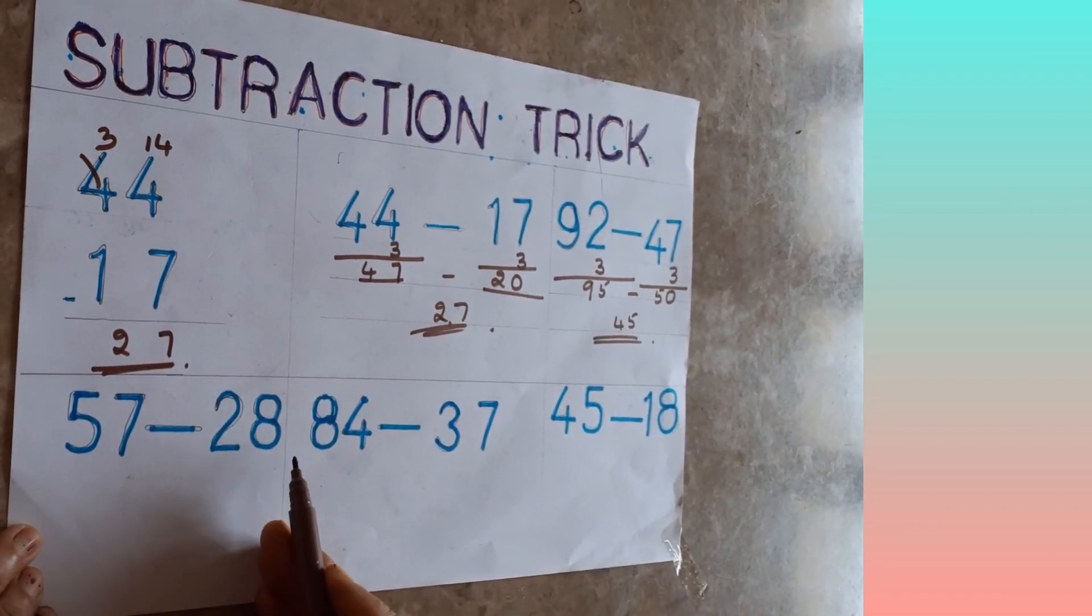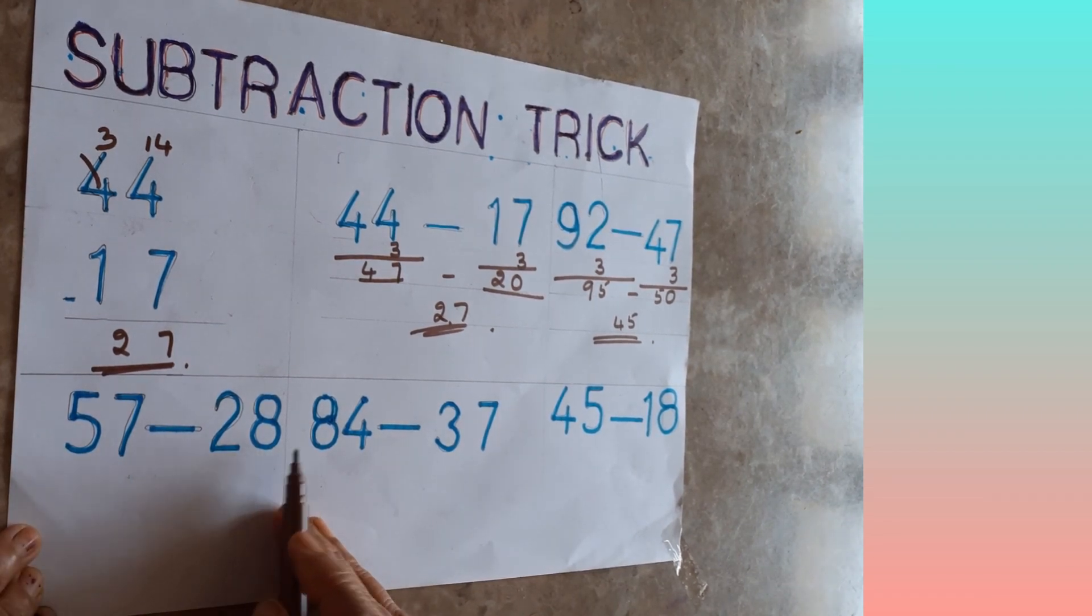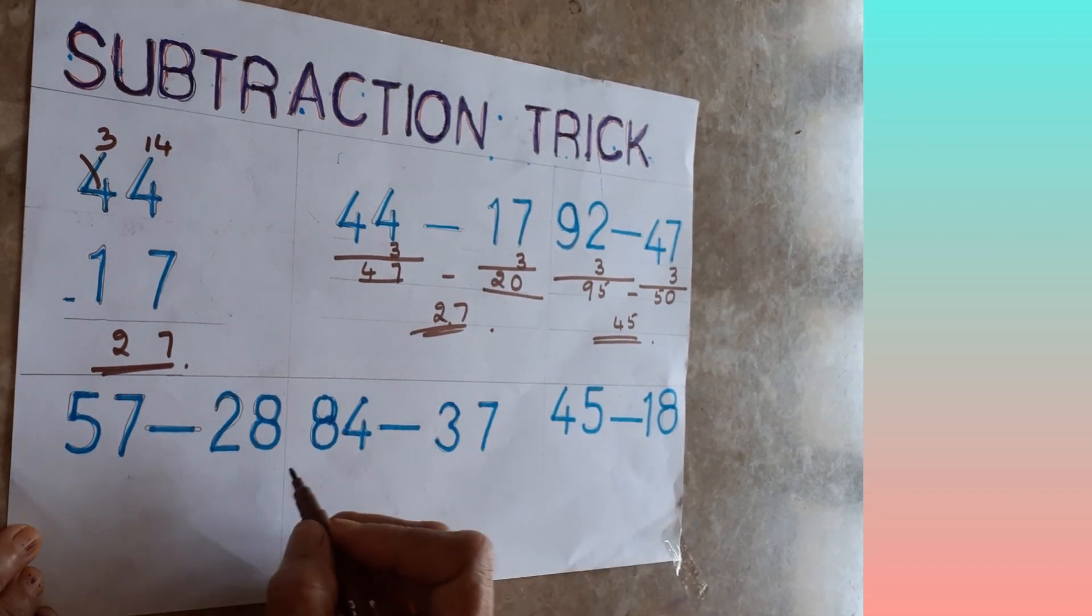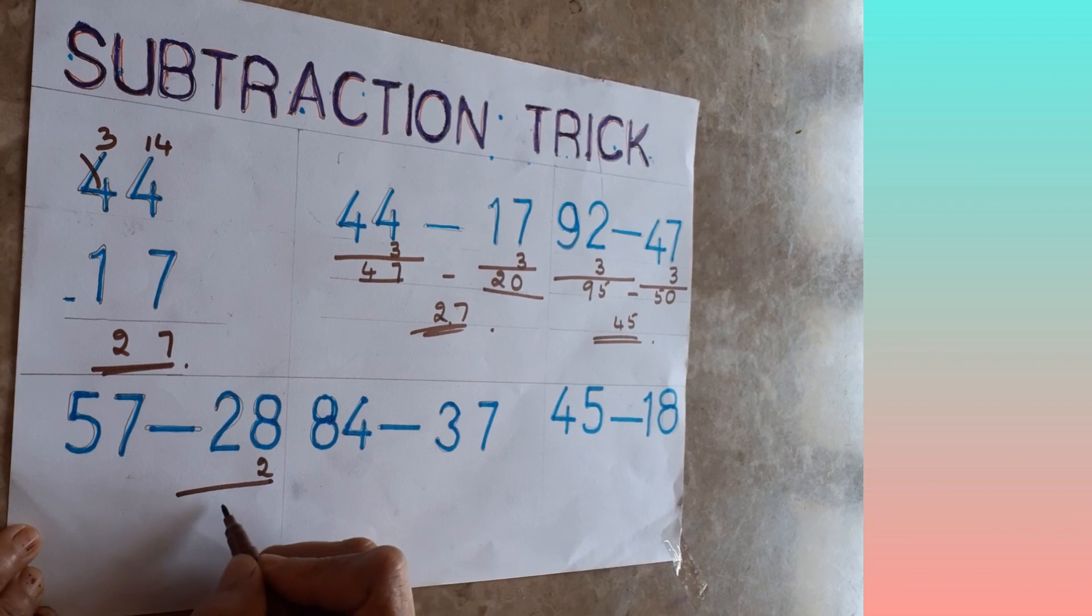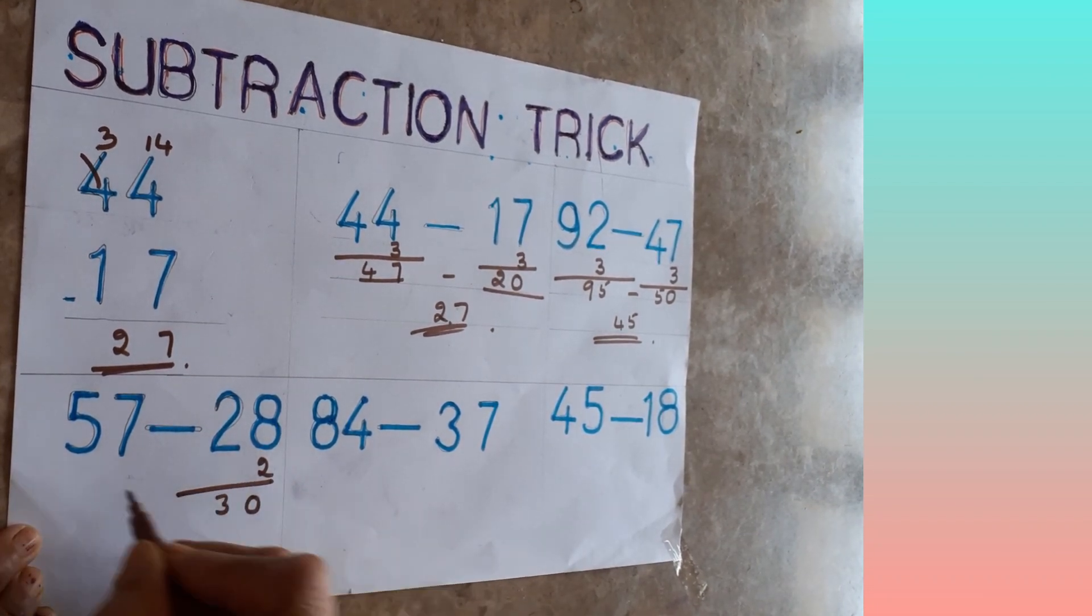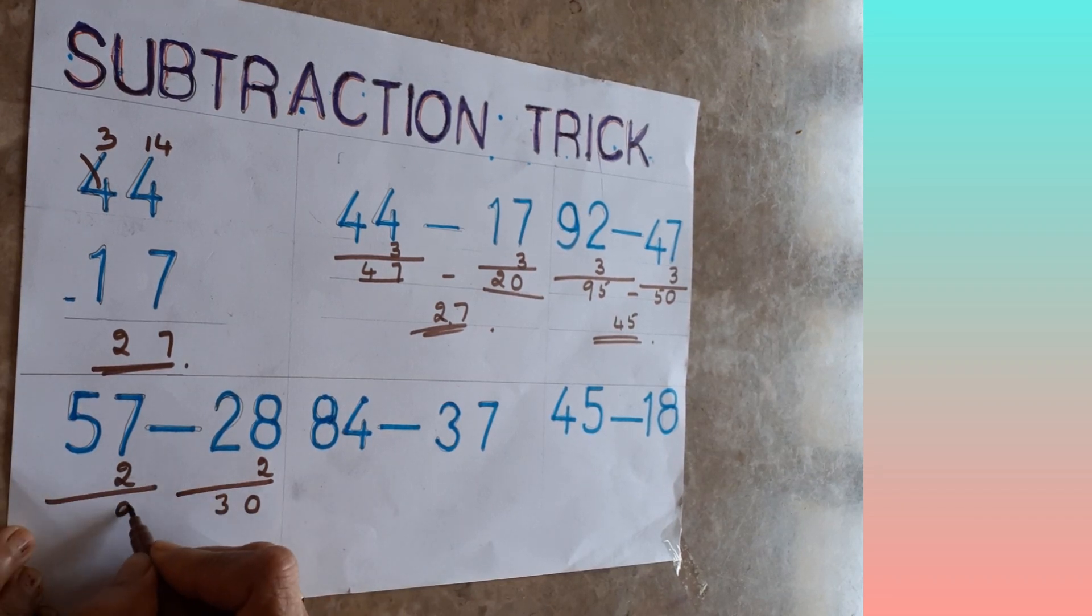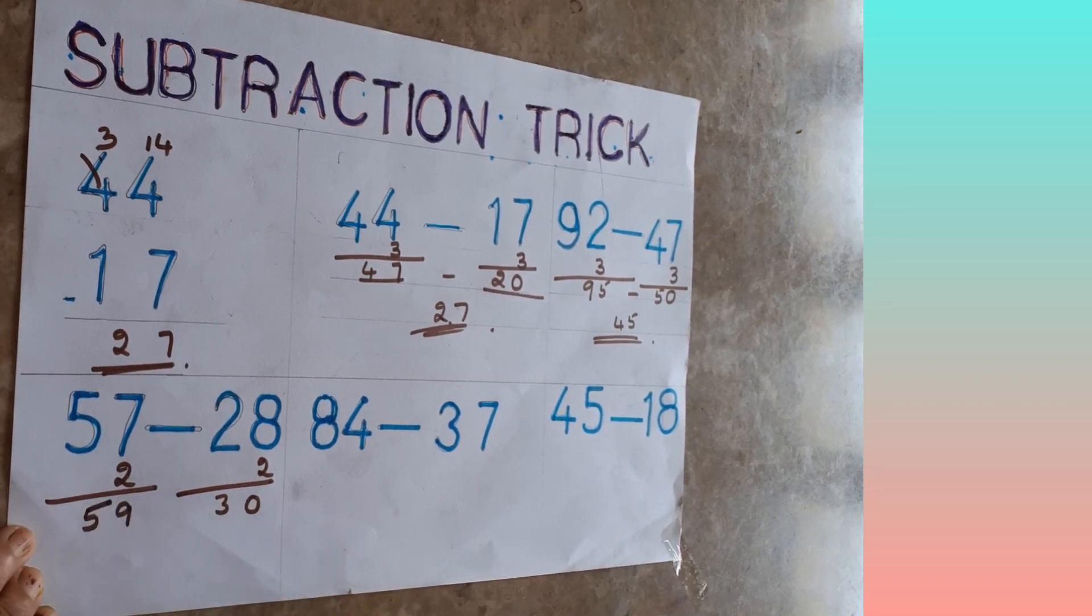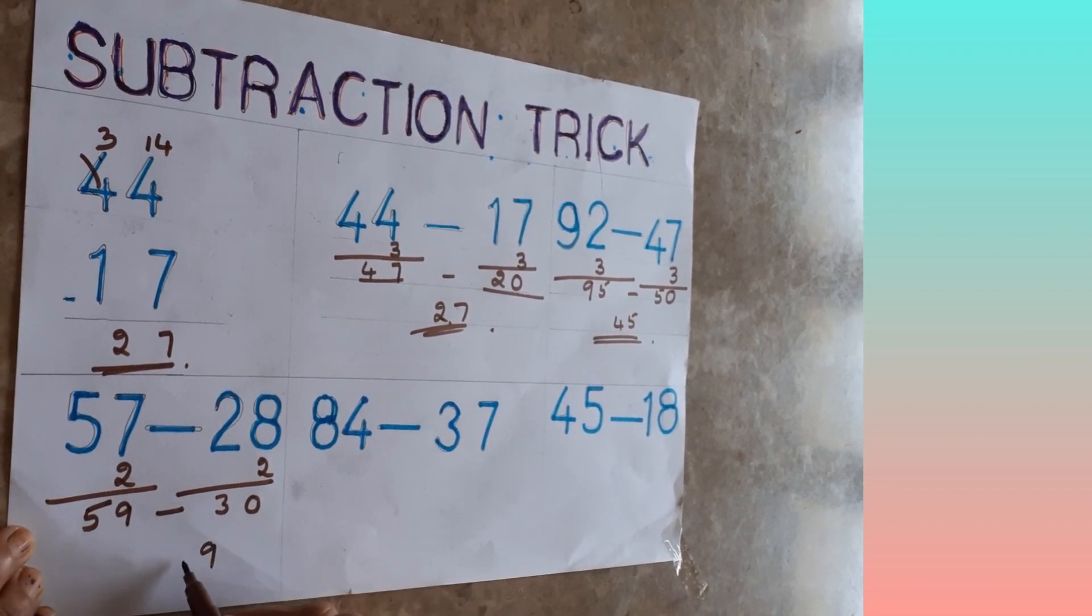57 minus 28. 7 means you have to add 3 numbers, 8 means you have to add 2 numbers. Which is the less number, you take that number, then you add it. Then it will become 30. Same number whatever number you are adding here, same number you have to add here also in units place. 59. Now you do the subtraction. 9 minus 0 is 9, 5 minus 3 is 2. It's very simple to do now.